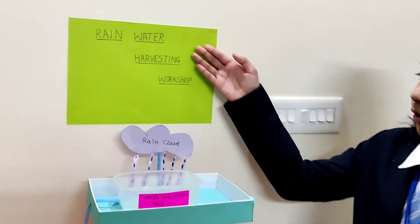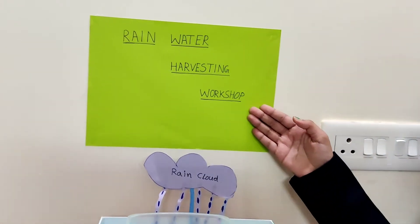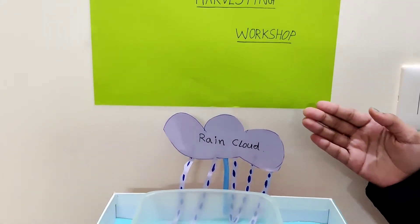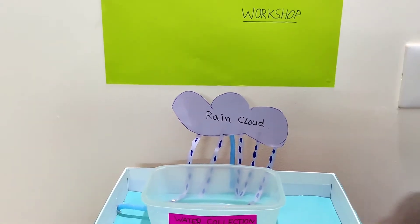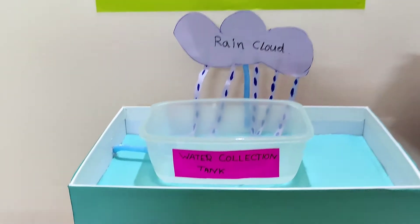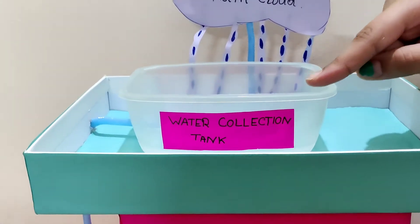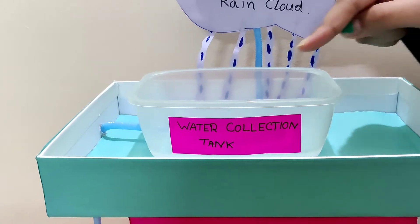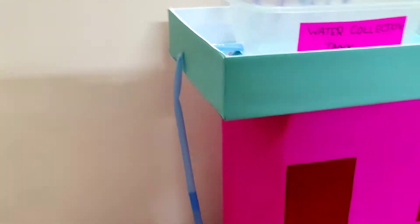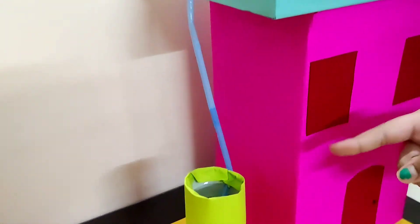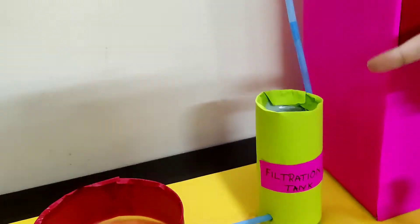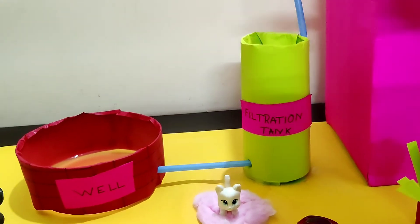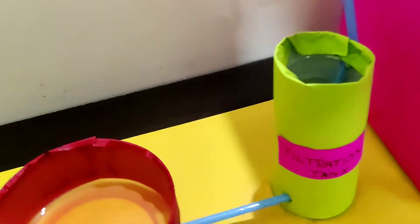So here is the rainwater harvesting model. When the rainwater precipitates to the ground, it will be stored in this water collection tank, and through this pipe, it will go to the filtration tank where it will get filtered with the help of stones or sand.